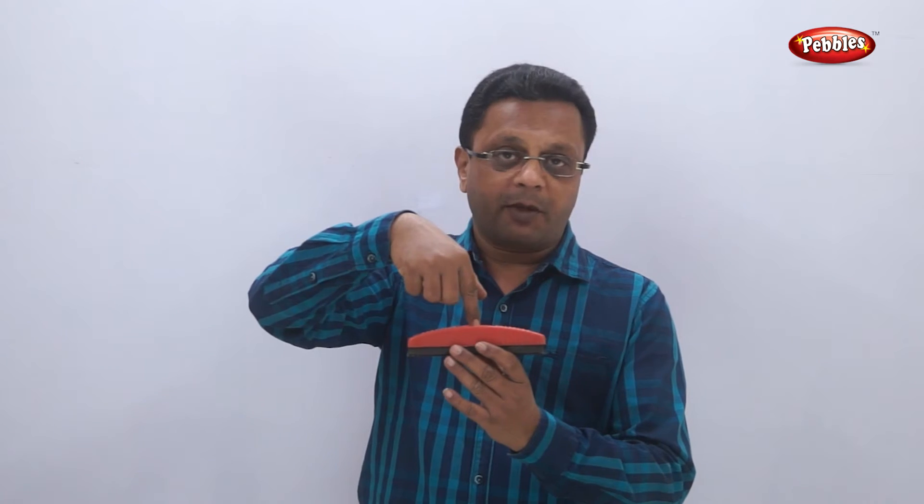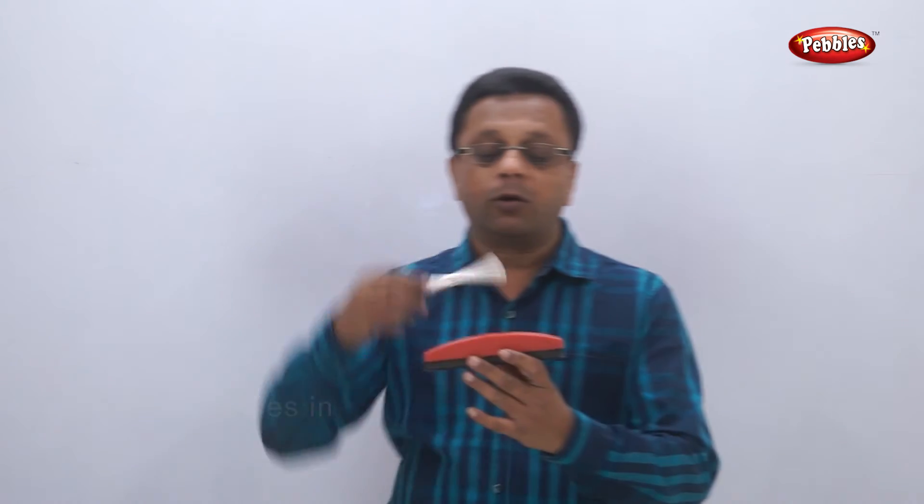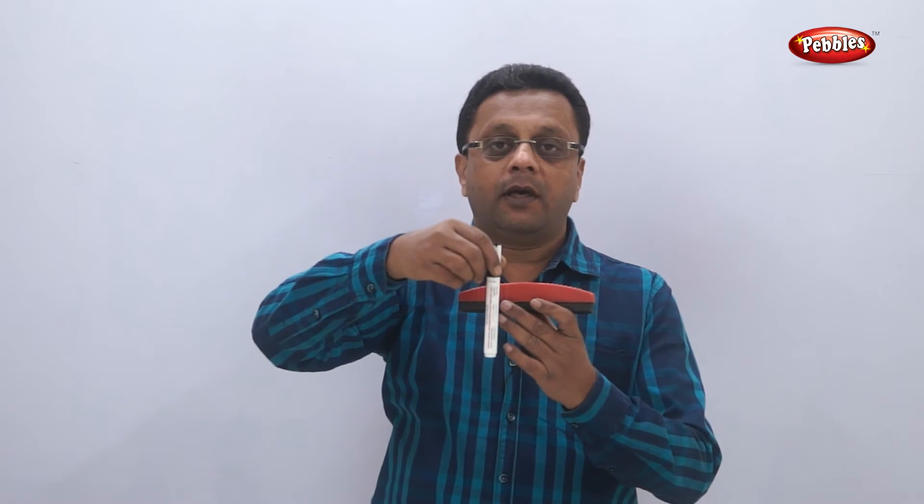Let us see one more experiment Orsted did. He took a thick copper wire. Then he took a card paper, a thick card paper, a rectangular one. At the center of the card paper, he pierced one hole. After piercing a hole, he passed the copper wire through it.